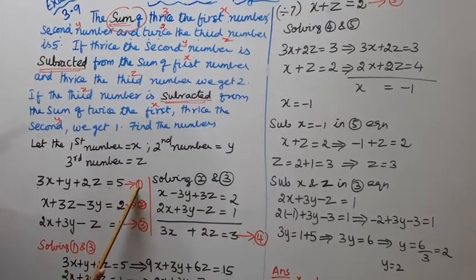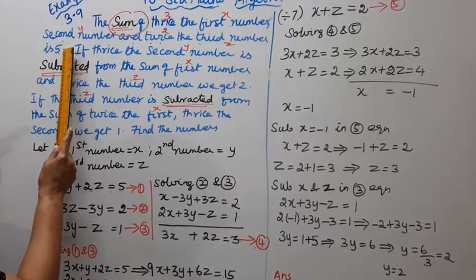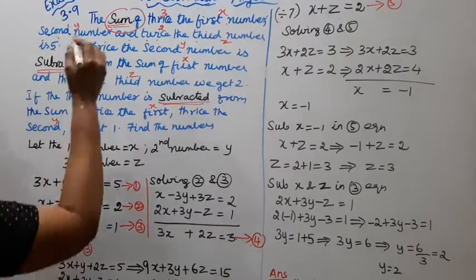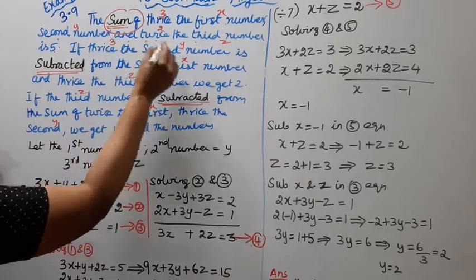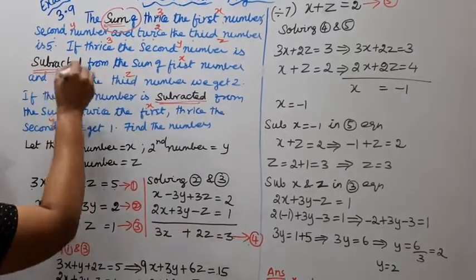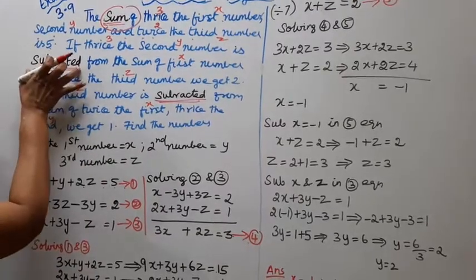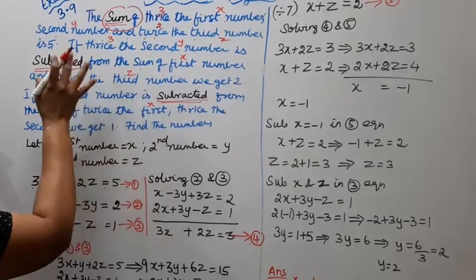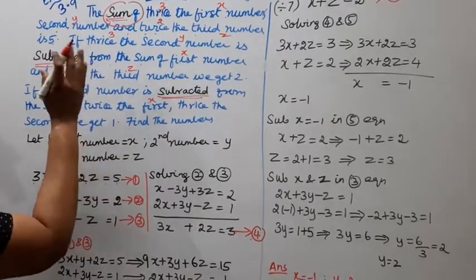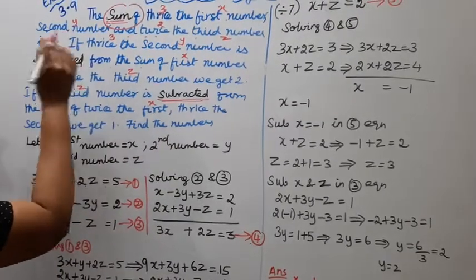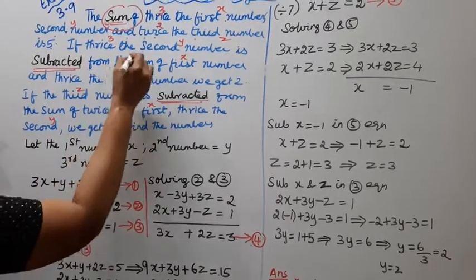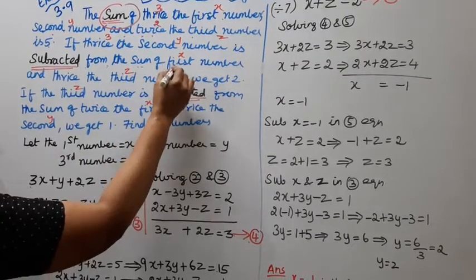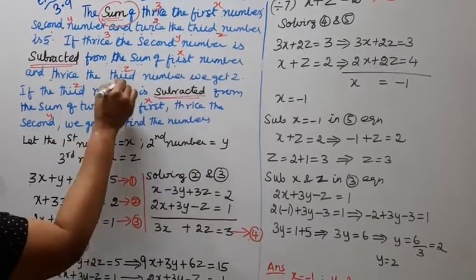The second equation: if thrice the second number is subtracted from the sum of first number and thrice the third number, we get 2. Subtraction means minus from the sum, where sum means addition.